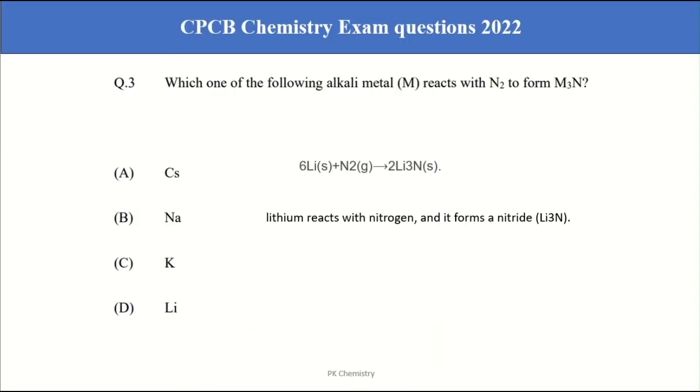Moving to the third question. Which one of the following alkali metal reacts with nitrogen to form Me3N? That means which one forms nitride with the alkali metals? The lithium only forms lithium nitrides among them all. So correct answer is D.